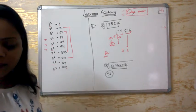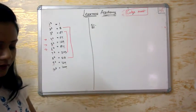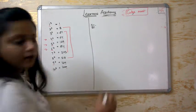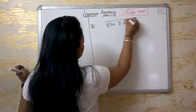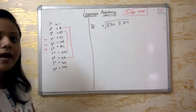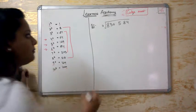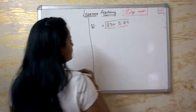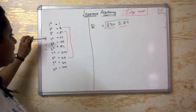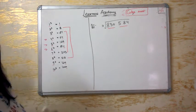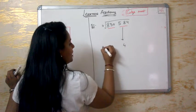One more example. The question is: find the cube root of 830584. As per this technique, you have to first do the grouping of these numbers. So these three and these three will be grouped together. The last digit is 4 — 4 always comes in the cube of 4. So the last digit of the answer is 4.